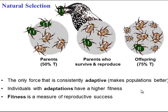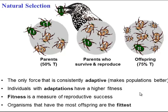Individuals with adaptations have a higher fitness. Fitness is not just about being strong or fast or surviving — fitness is about reproductive success. The more offspring you have, the more fit you are.